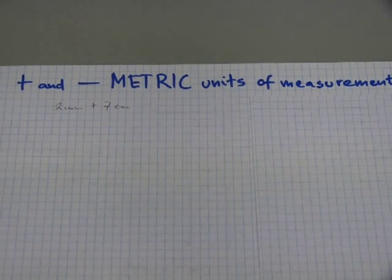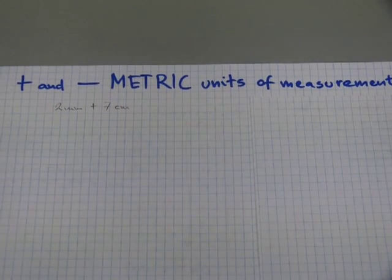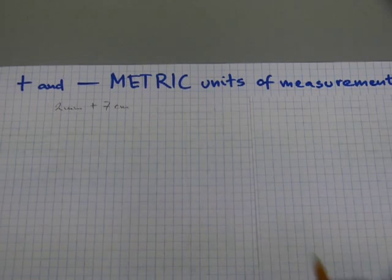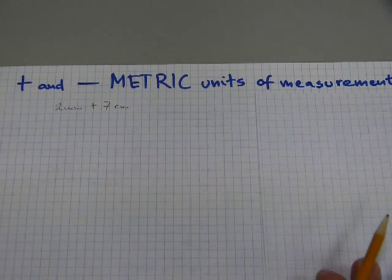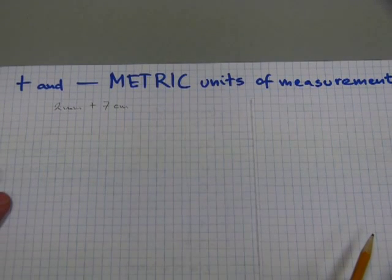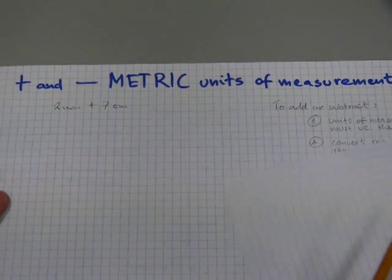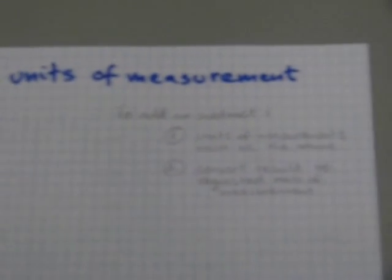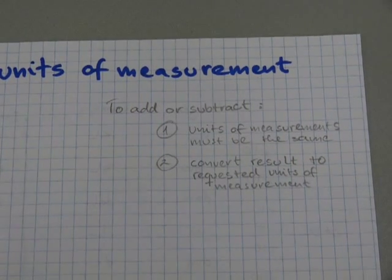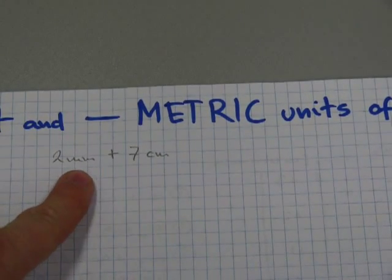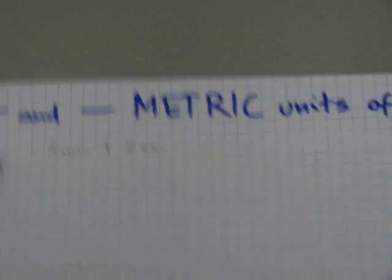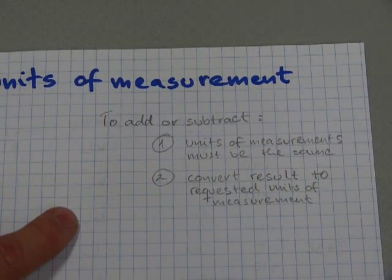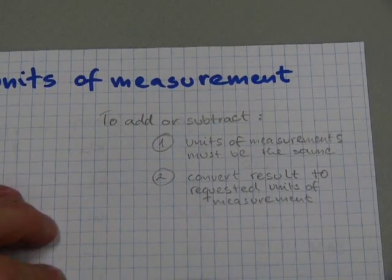I need a final unit of measurement to express the length of that line. So there's two steps to do these kind of number operations when you have different units of measurement. Here are these two steps. To add or subtract, the units of measurement must be the same. So you can't meaningfully add millimeters and centimeters as is. And once you added them together, you're going to have to convert the result to the requested units of measurement.